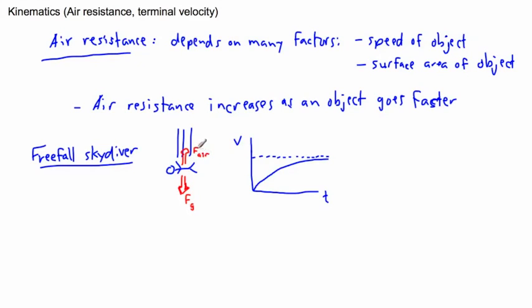That upward air resistance force grows until it's equal to the gravitational force. It won't grow bigger, because that would mean you'd actually stop or go upward, which doesn't happen. As the downward gravitational force becomes equal to the upward air resistance force, you're no longer accelerating — the net force is zero. That doesn't mean you stop moving; it means you stop accelerating, so your velocity becomes constant.